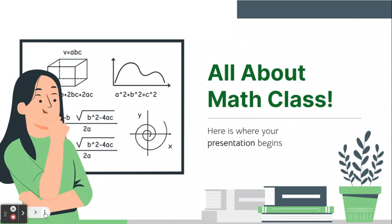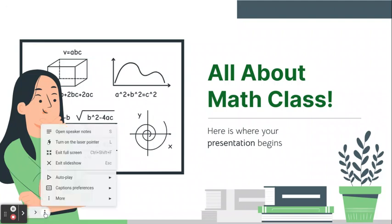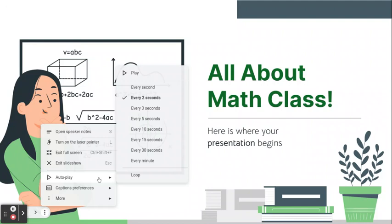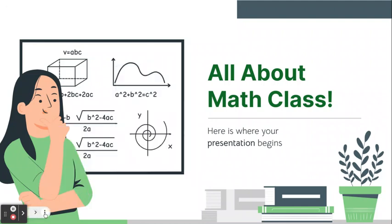So I'm going to come over here and I'm going to click on the three dots, and I'm going to pick autoplay. And then for back-to-school night, I'm going to use about 30 seconds. That seems to be a good amount. But for this, I'm just going to leave it on two seconds.